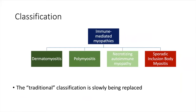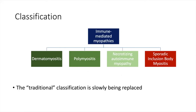How do we classify the inflammatory myopathies? Here's the traditional classification that probably Rami and I would have learned in medical school, and it's being replaced by a newer classification. Classically speaking, the immune-mediated myopathies have been classified as dermatomyositis, polymyositis, necrotizing autoimmune myopathy — which in itself is a newer designation — and then sporadic inclusion body myositis. I put IBM in red because it is a very different entity than the other three, kind of like the odd one out.